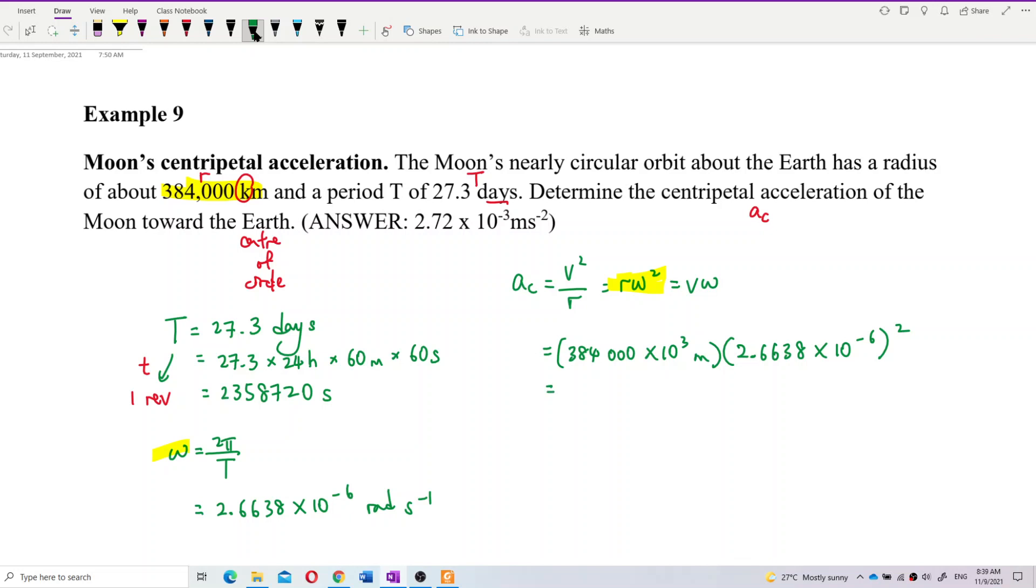Okay, so multiply. So what's the answer I get? Let's calculate and see. The answer is 2.72 exponent negative 3, in meter per second squared. Is the answer correct? Yes, it is correct. Check after checking. So a big tick there.